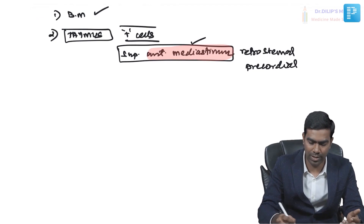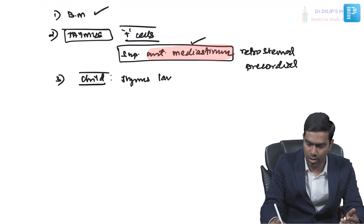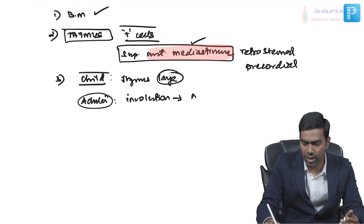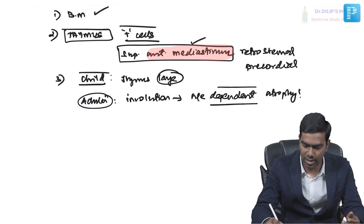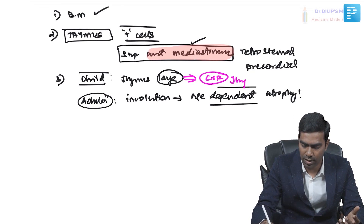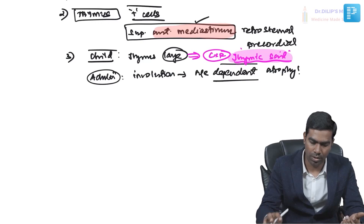The thymus is very active in childhood, where it is large and prominent. In adults, it undergoes thymic involution and age-dependent atrophy. In children, the large thymus is visible on chest X-ray and gives rise to the thymic sail sign — a prominent thymic shadow commonly seen in neonates and newborns.